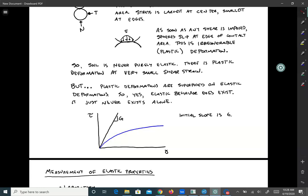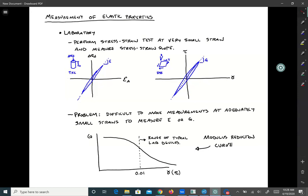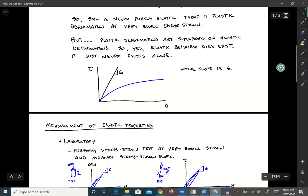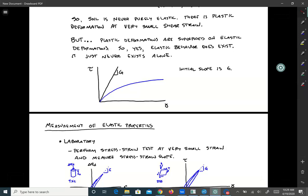Let's talk about how we measure elastic properties. One way is to try and do this in the laboratory. We have triaxial compression tests, direct simple shear tests, all sorts of different tests, and we can measure stress-strain behavior. If we can get small enough, maybe down in this region, the difference between the plastic strain is small and the elastic strain is pretty big.